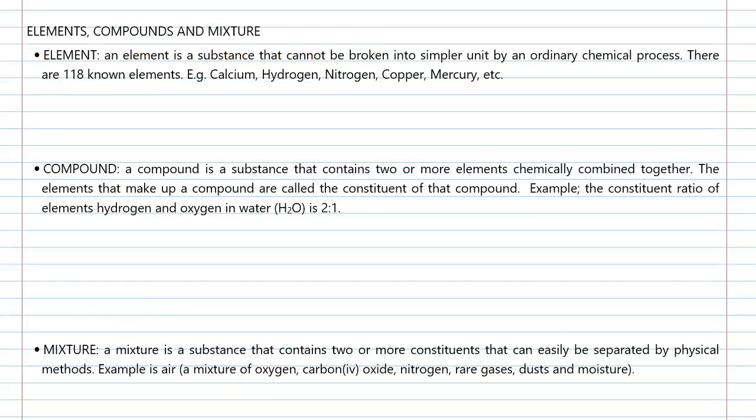Let's further study matters in form of elements, compounds, and mixtures. An element is a substance that cannot be broken into simpler unit by an ordinary chemical process. There are 118 known elements. Examples are calcium, hydrogen, nitrogen, copper, mercury, argon, potassium, etc.